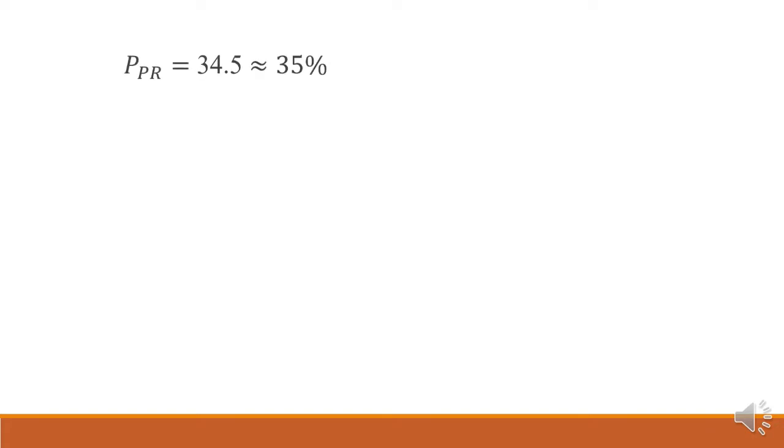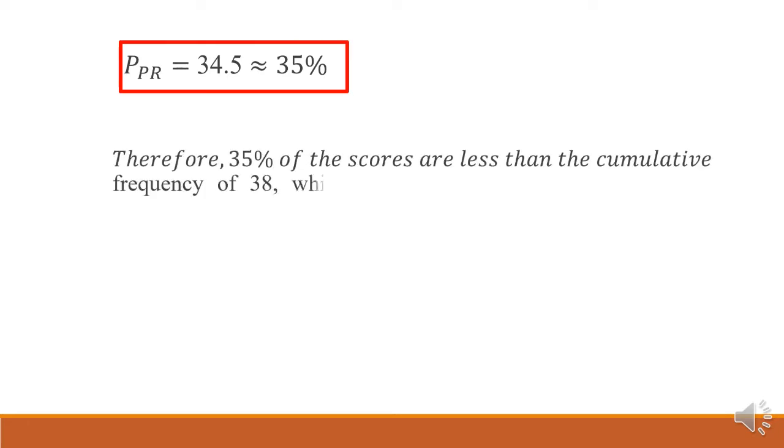Since our answer is 35 percent, therefore 35 percent of the scores are less than the cumulative frequency of 38, while 65 percent of the scores are greater than the cumulative frequency of 38. We get 65 percent by subtracting 100 percent minus 35 percent, so we have 65 percent. So therefore if we have a raw score of 38, the percentile rank is 65 percent or 65.